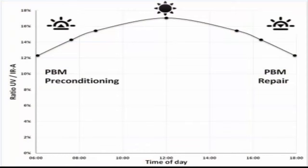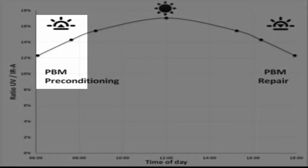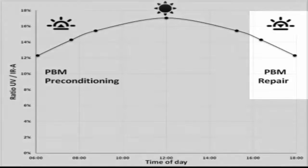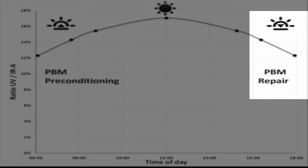This image is showing the ratio of ultraviolet to near-infrared. The lower this ratio, the better. The higher, the more harmful the ultraviolet damage is going to be. So what we can see is this ratio is at its lowest in the morning with the preconditioning, but it's also low in the late afternoon with a repair stage.